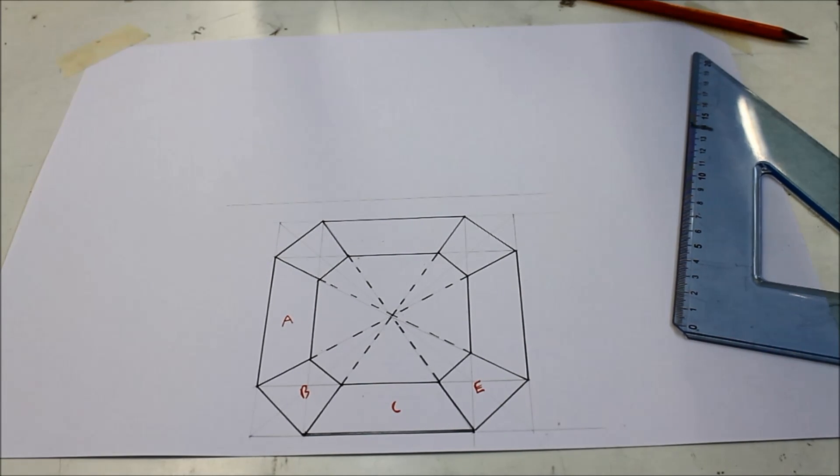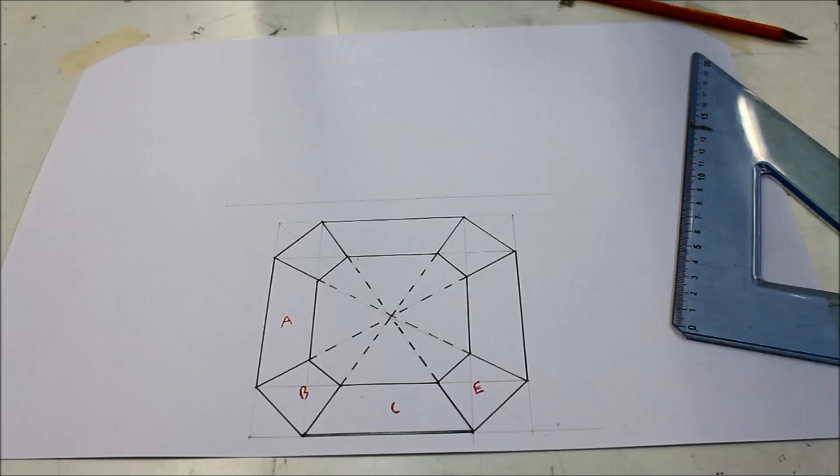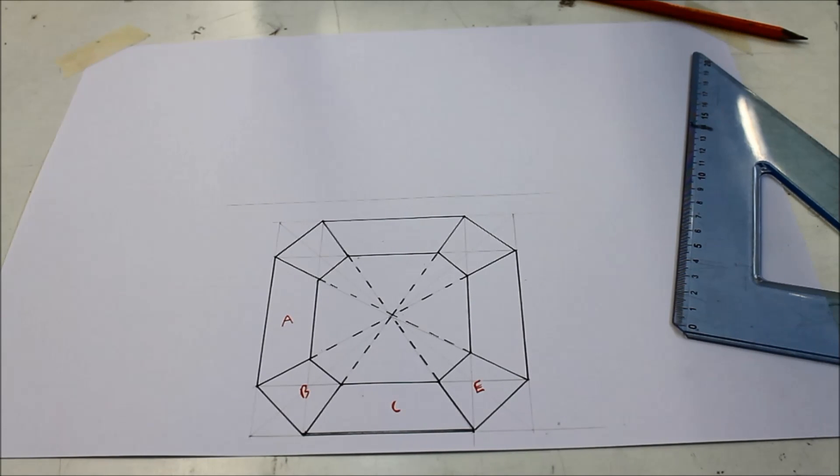That is the plan done. That is A part one done. The next part says surfaces A and C on the top of the diamond have a pitch of 45 degrees. Draw the elevation of the top portion of the diamond, surfaces B, C, and E. They only want the top portion.